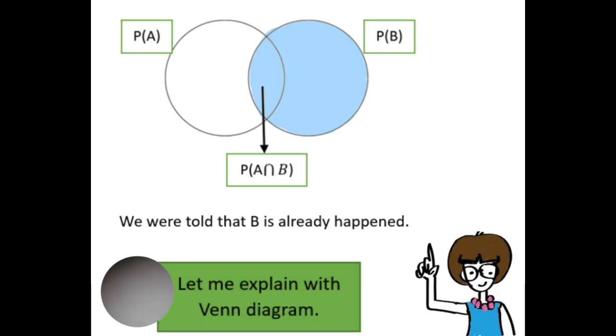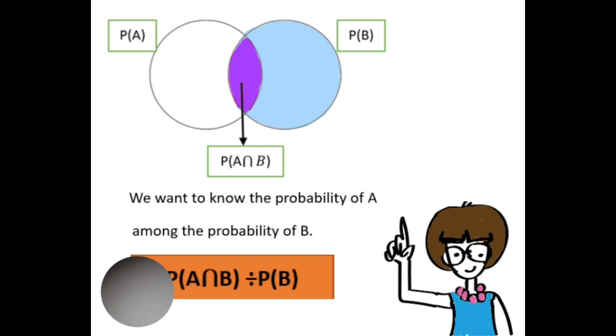Now, because the question already told us that B has happened and we want to know the probability of A among that probability of B. So, we don't divide by the total outcomes like sample space like we normally do.